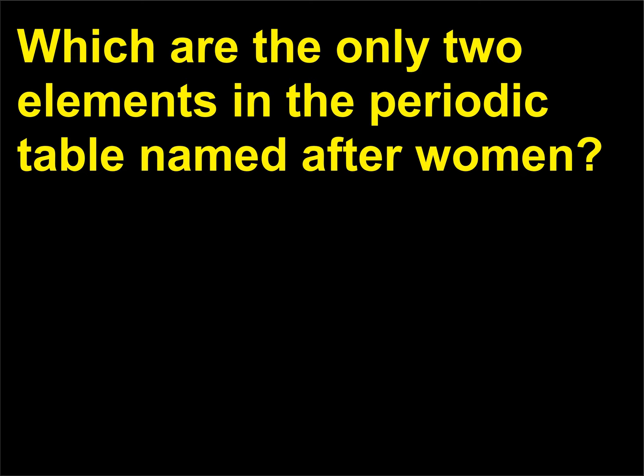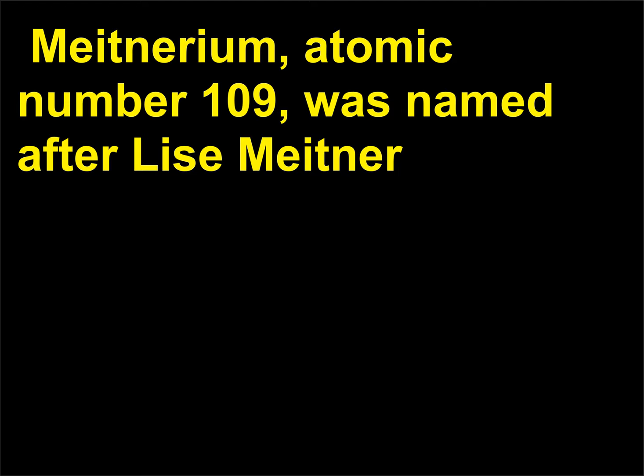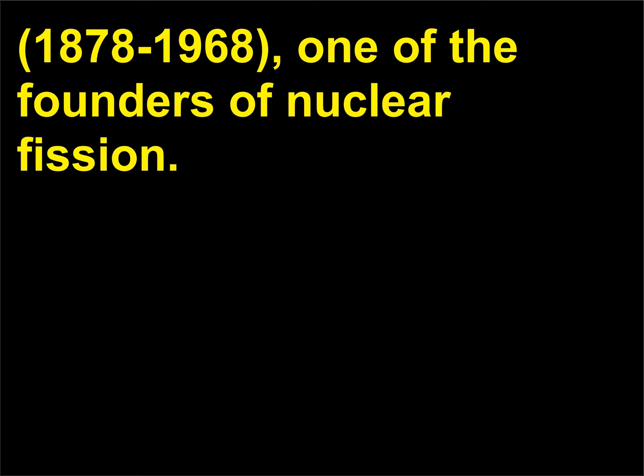Which are the only two elements in the periodic table named after women? Curium, atomic number 96, was named after the pioneers of radioactive research Marie, 1867–1934, and Pierre Curie, 1859–1906. Meitnerium, atomic number 109, was named after Lise Meitner, 1878–1968, one of the founders of nuclear fission.